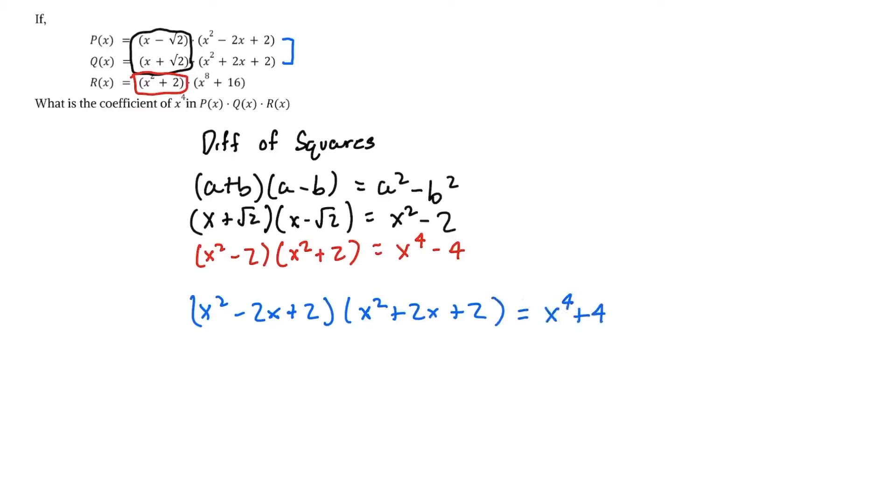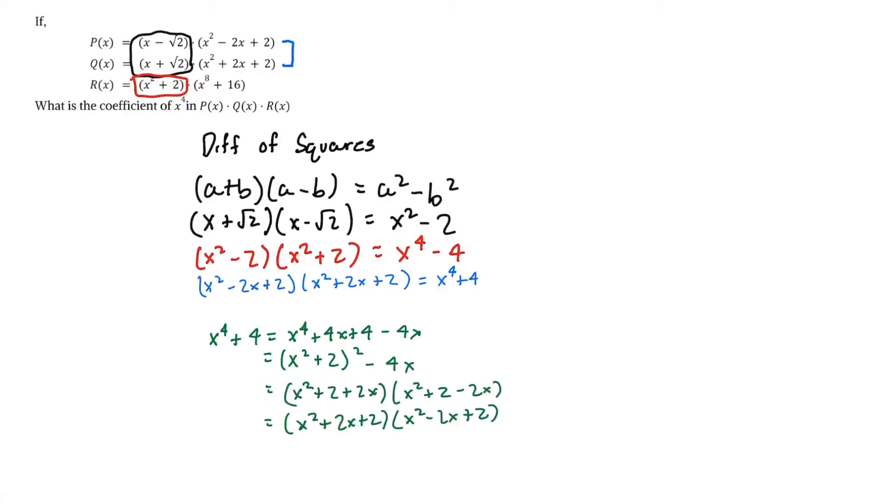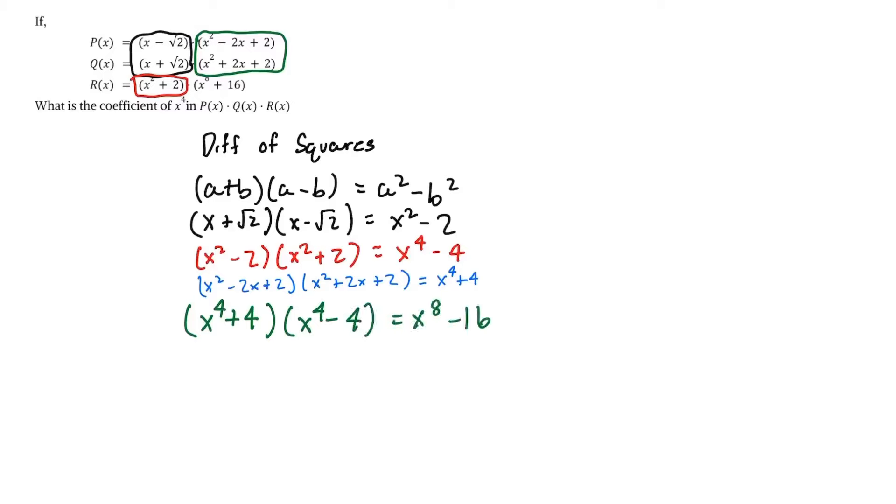And there is a simple breakdown of the factorizing, which I will flash on the screen right now. Here it is. So now we can say that (x⁴ + 4) times (x⁴ - 4) is equal to x⁸ - 16.